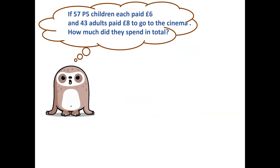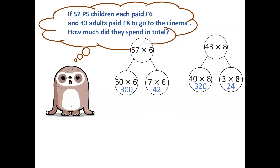Here, Greg is challenging us to solve a problem. If fifty-seven P5 children each paid six pounds and forty-three adults paid eight pounds to go to the cinema, how much did they spend in total? I can see this problem is going to take more than one calculation. I will have to separately calculate how much the children spent and how much the adults spent.